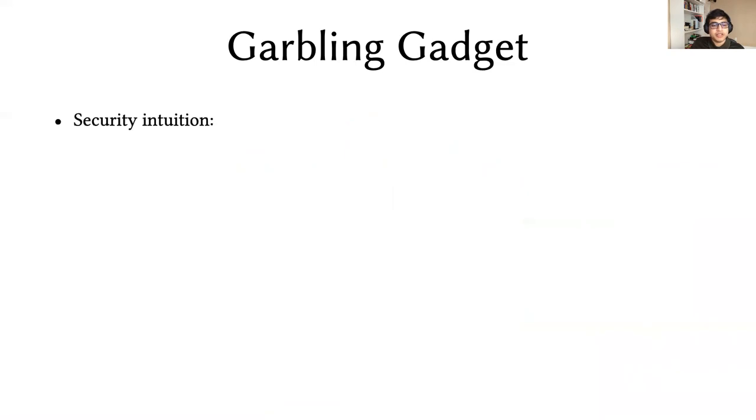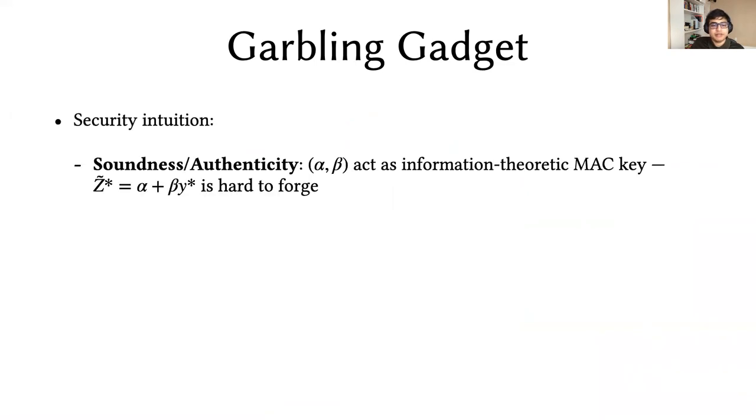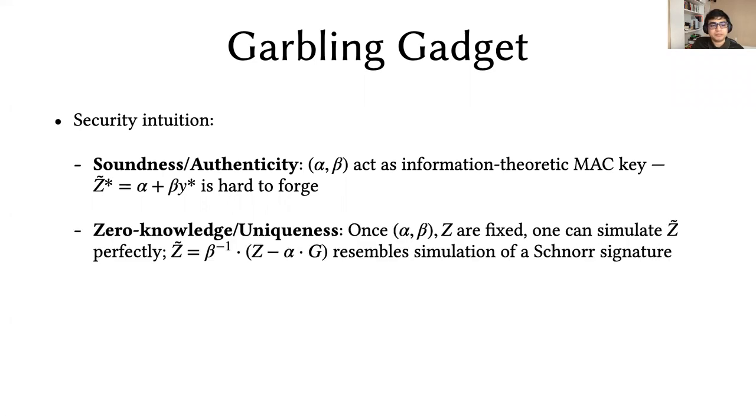The intuition for security is that first, authenticity of the garbled circuit, which corresponds to soundness of the ZKGC proof, comes from the fact that the mechanism with α and β serves as an information theoretic MAC. Forgery is as hard as either guessing these values or breaking the encryption scheme. Uniqueness for the garbled output, which is what gives us the knowledge of the ZKGC proof, comes from the fact that once α, β, and z are fixed, we can simulate z tilde perfectly. Essentially, this technique is very similar to simulating a Schnorr signature or a Schnorr proof of knowledge.